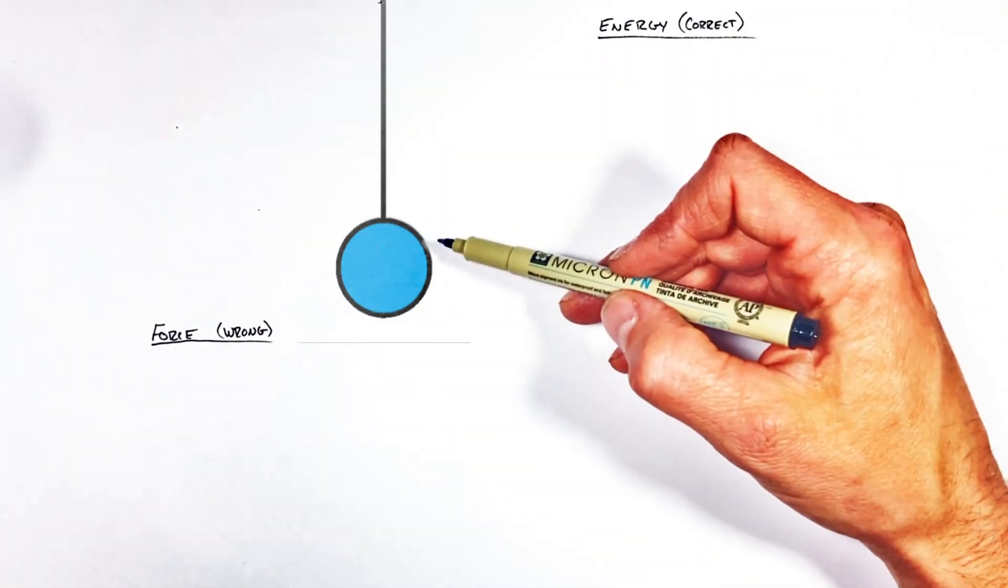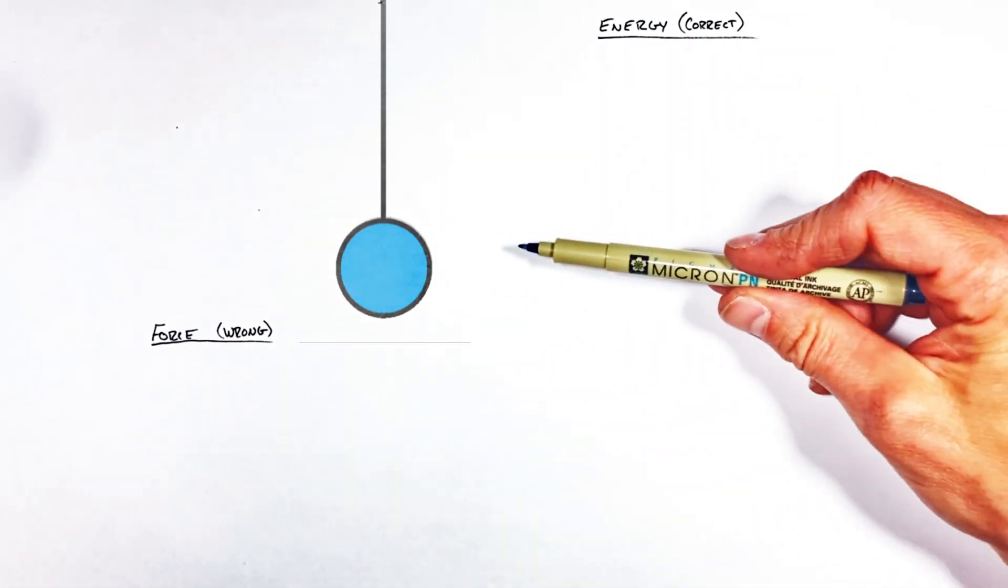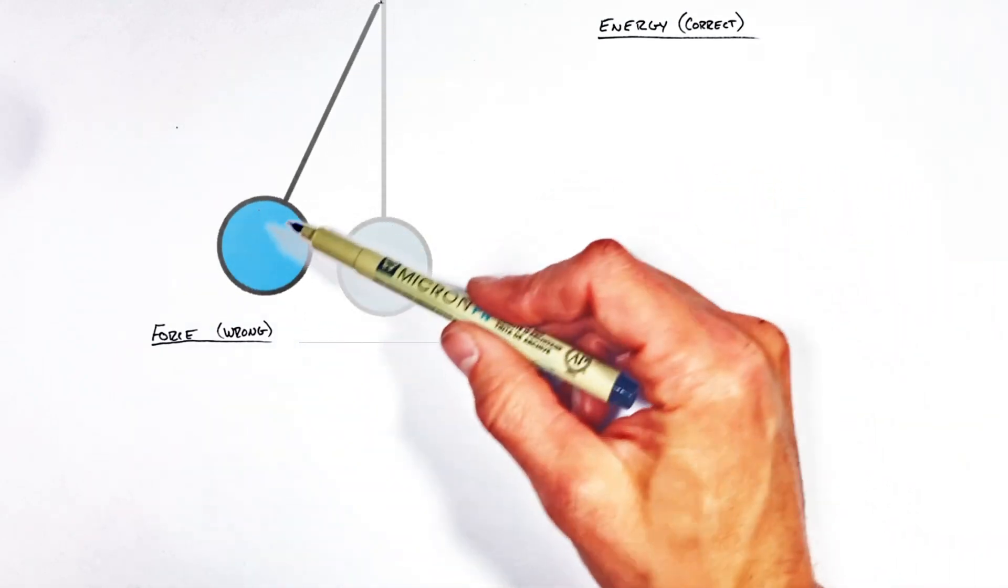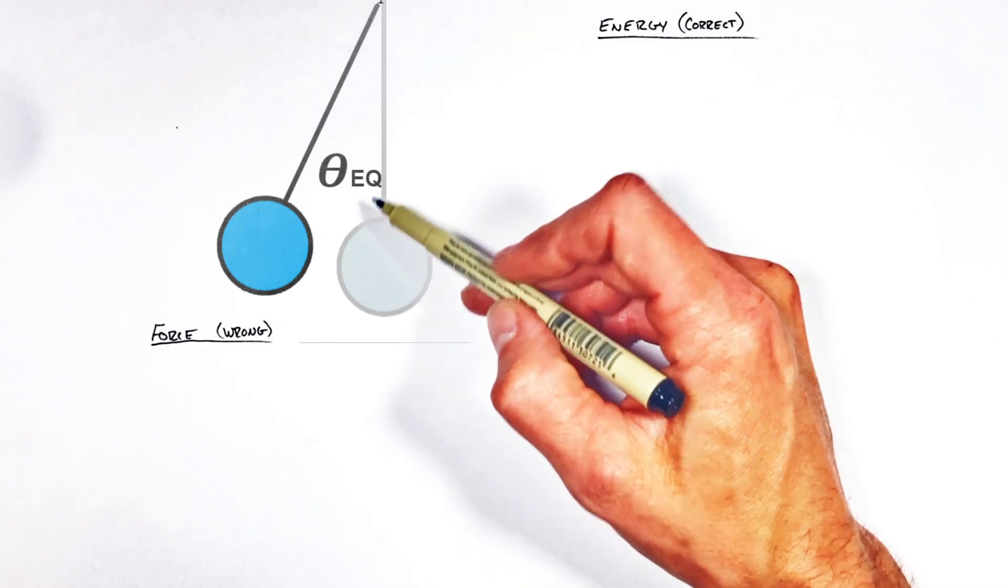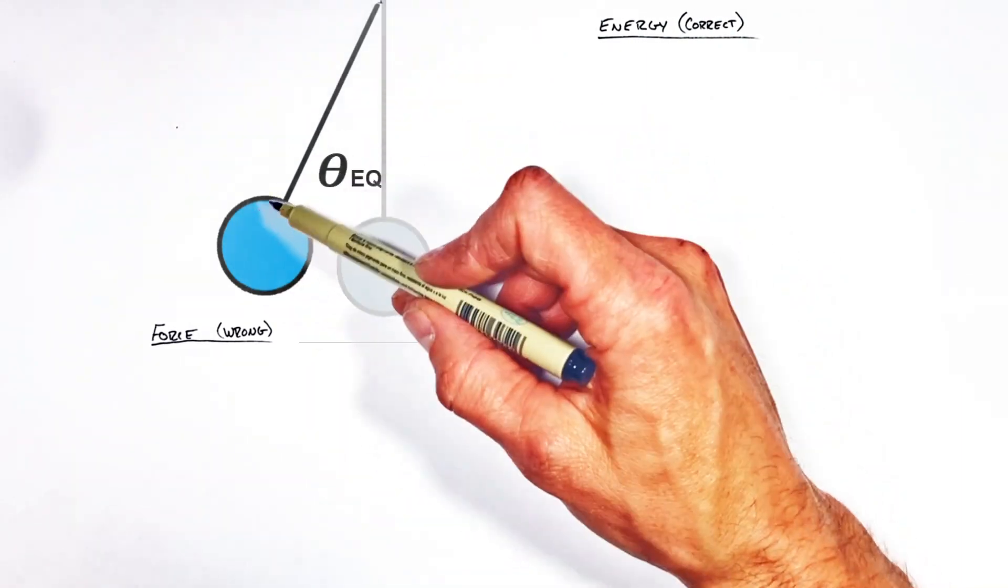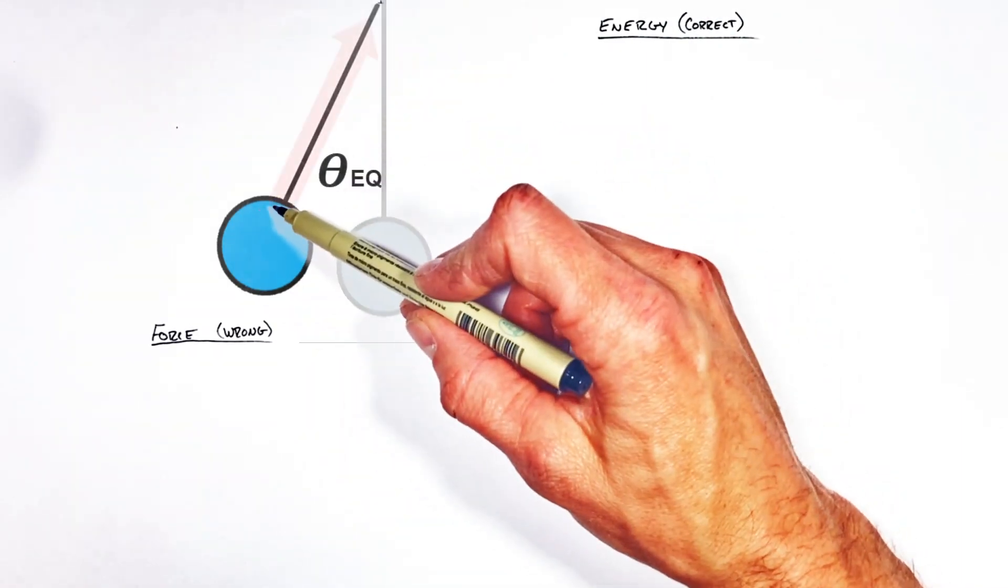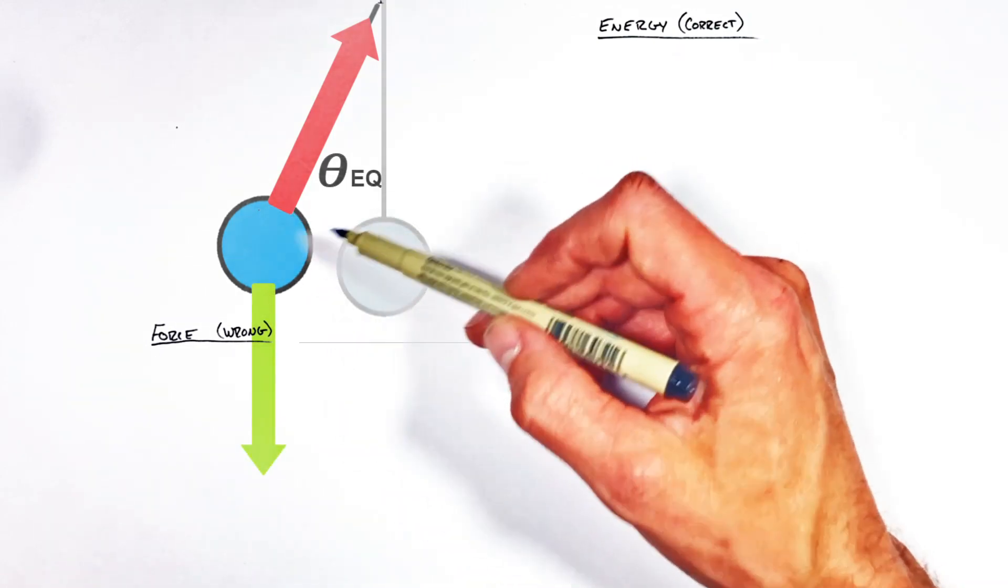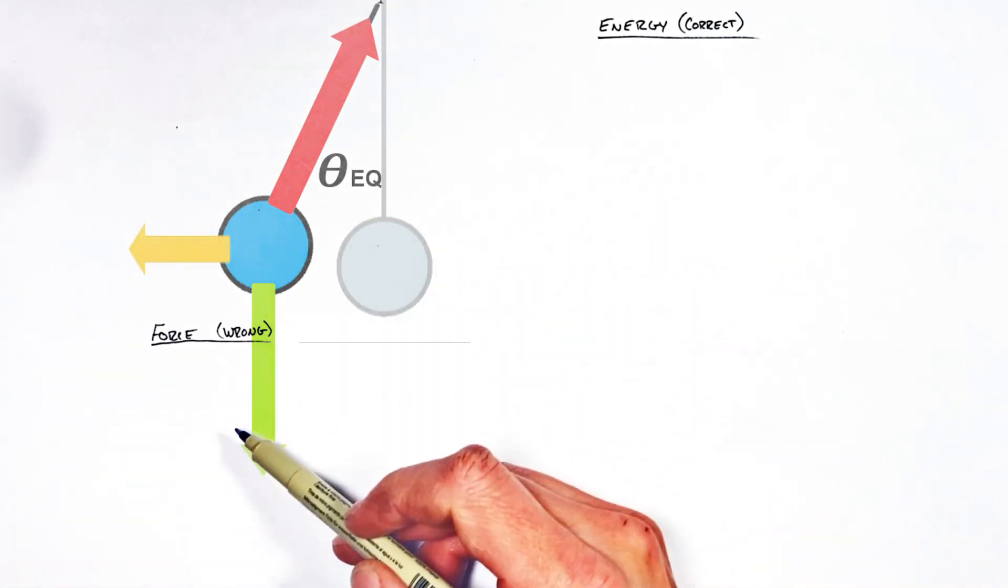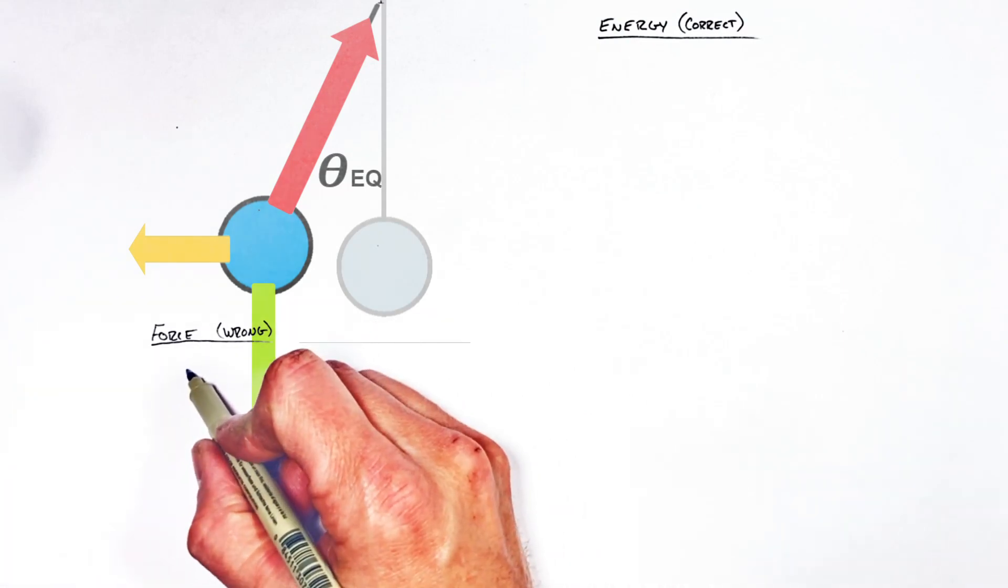You see what happens is when people look at this pendulum, they think if you push sideways on the pendulum, at some point the pendulum will reach equilibrium. If you work through the math here, you can see that at equilibrium, the tension force has a vertical component equal to gravity and a horizontal component equal to our horizontal push force here.